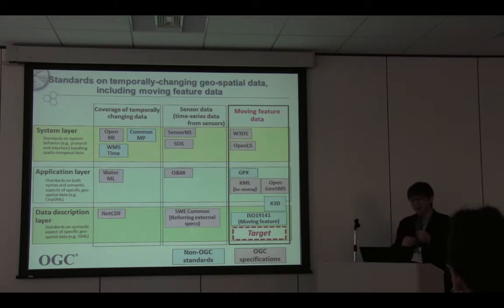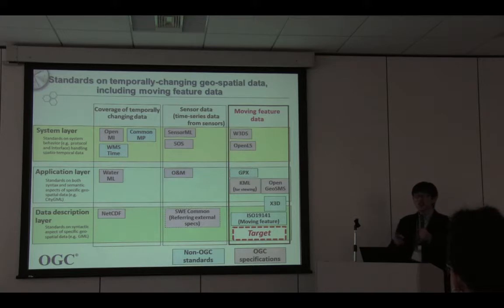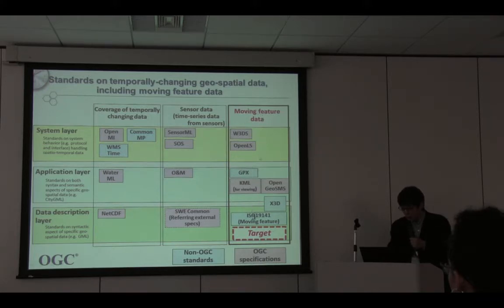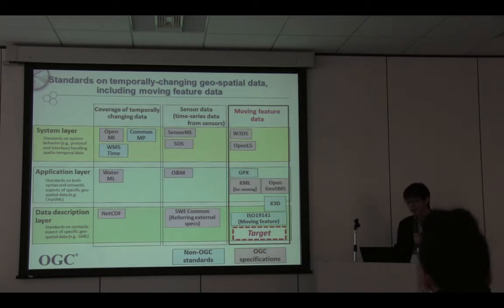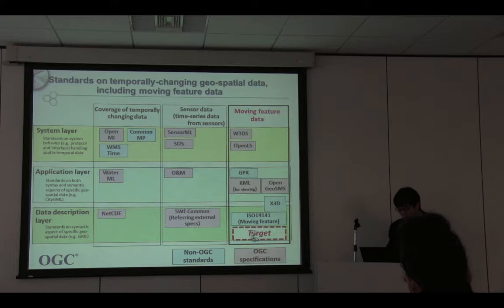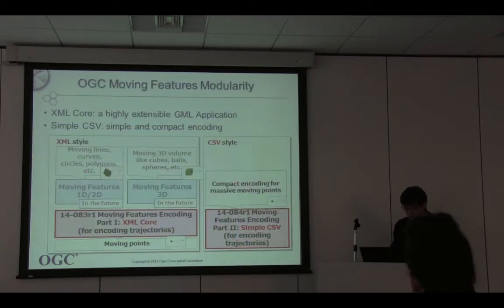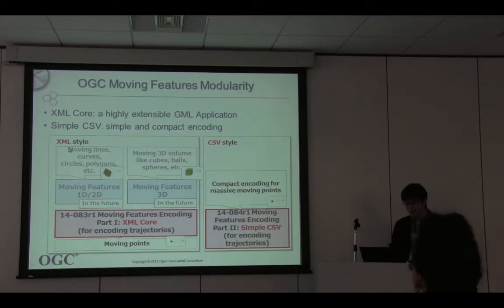For the moving feature data, ISO 19141 described some conceptual models but nothing for implementation, and it was published in 2008. That means almost six years passed without doing anything for implementation. So we defined the target: developing an implementation standard for exchanging data. We provide two different kinds of standards — Part One and Part Two. Part One is based on the tradition and heritage of GML — it's XML-based.